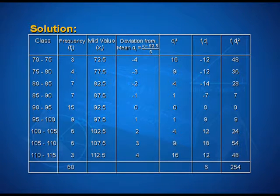Then, come to fourth column. This shows the deviations from mean. Di is equal to xi minus 92.5 upon 5. This 5 is the width of this class interval, 75 minus 70, that is 5. Now, we get the values as minus 4, minus 3, minus 2, minus 1, 0, 1, 2, 3, 4 respectively.